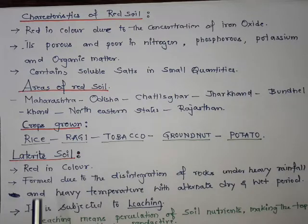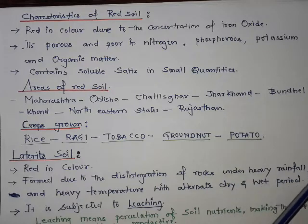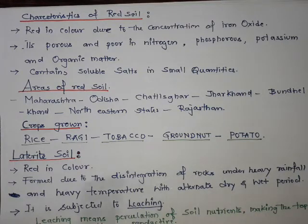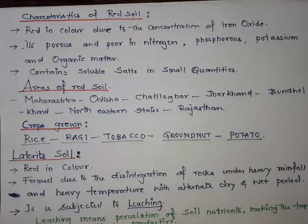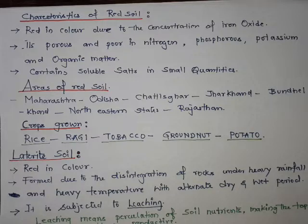Laterite soil is red in color and is formed due to the disintegration of rocks under heavy rainfall and high temperature, with alternate dry and wet periods. The rainfall must not be continuous — there has to be an alternating season of dry and wet periods for the disintegration of rocks to occur, resulting in the formation of laterite soil.